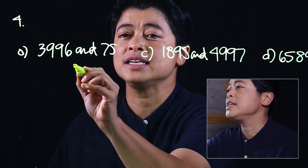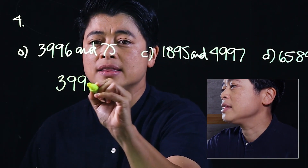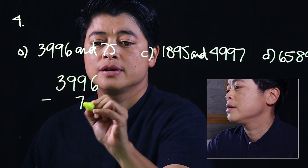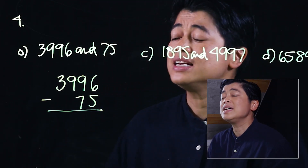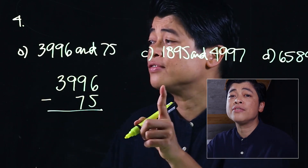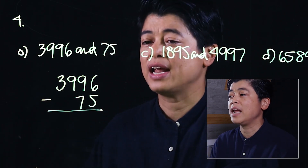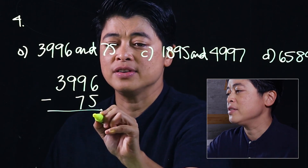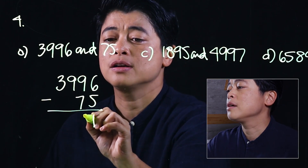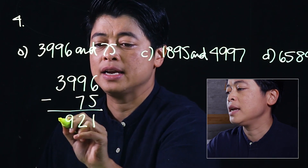The difference between three thousand nine hundred ninety-six and seventy-five — we write it down vertically. This is clearly computational, so we refrain from subtracting left to right and start from the right going to the left. Six minus five is one, nine minus seven is two, then nine and three.